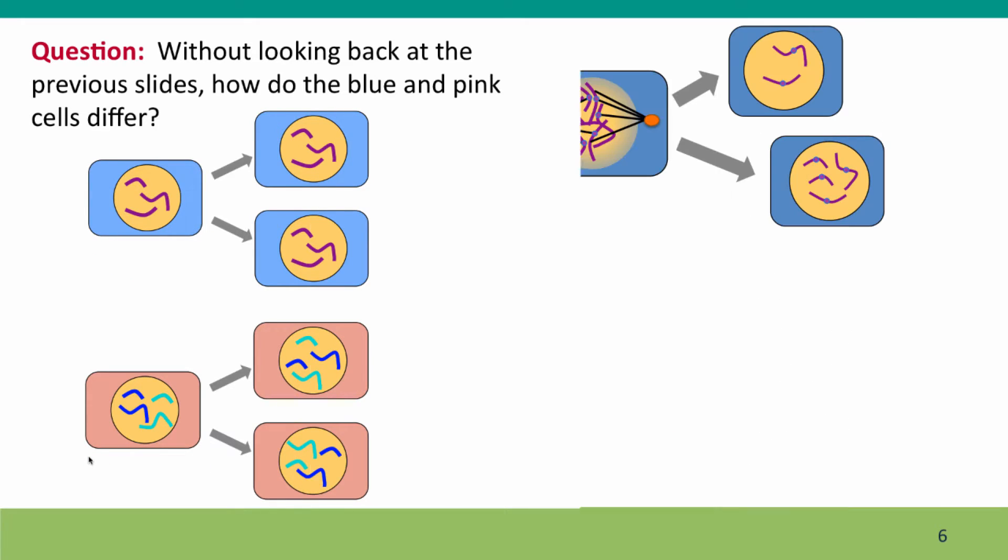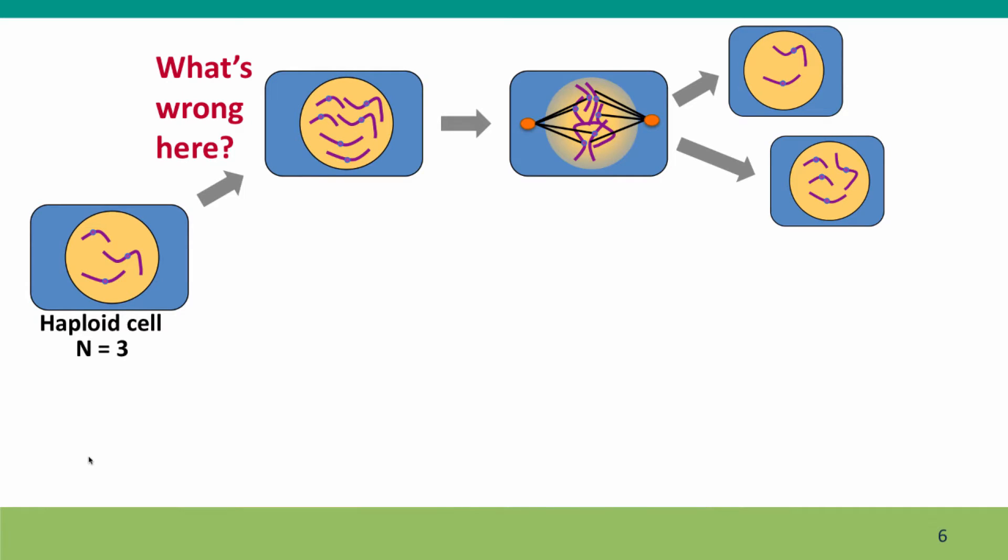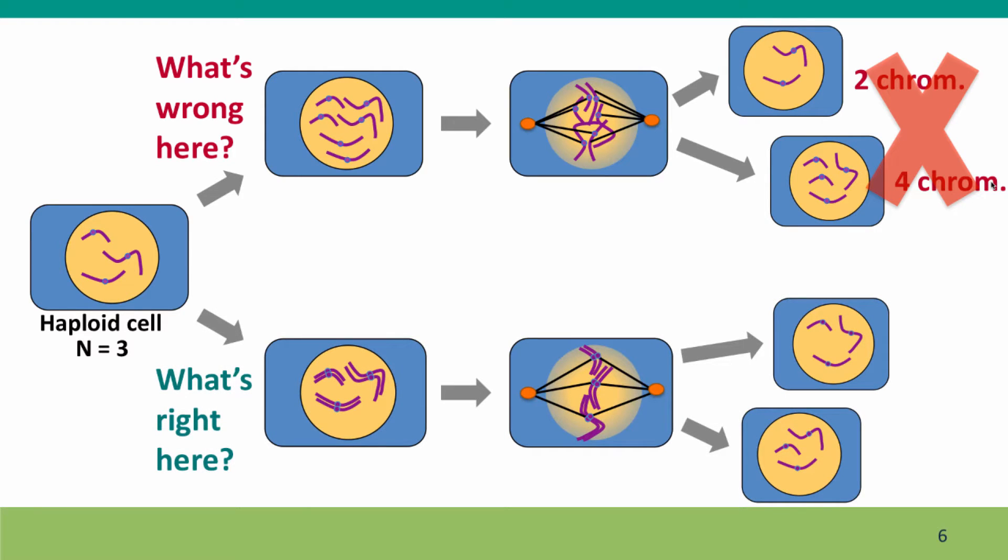Now I'm going to show you a drawing of mitosis that's wrong. And take a few seconds to look at it and go, wait, what's wrong with this picture? This is a picture of mitosis. What's obviously wrong is that the daughter cells are not identical to each other and they're not identical to the parent cell. One of the daughter cells has only two chromosomes. The other has four. But the parent cell had three chromosomes.